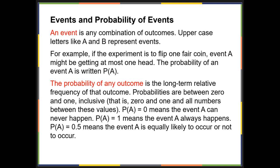Probabilities are all between 0 and 1, inclusive, meaning that it's 0 and 1 and any of the numbers in between. If you get the probability of an event A equals 0, it means the event can never happen.